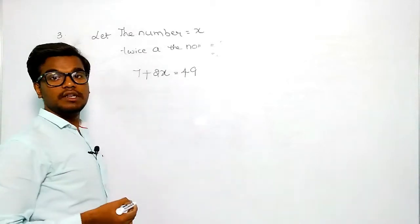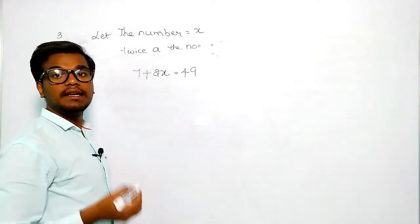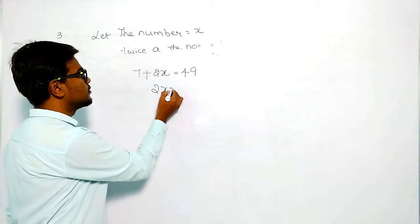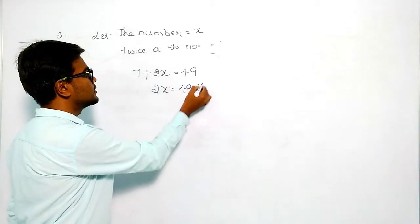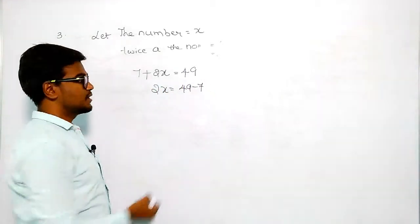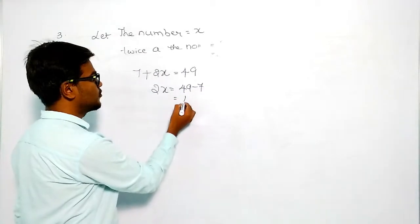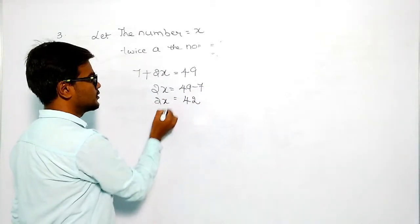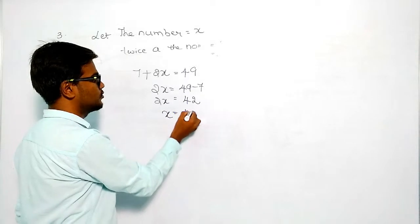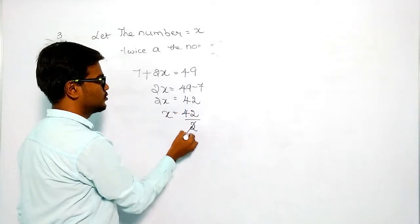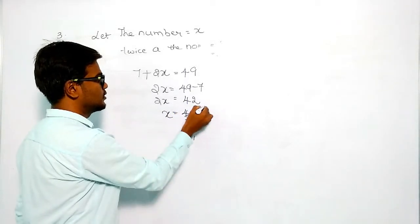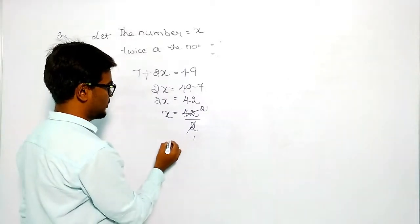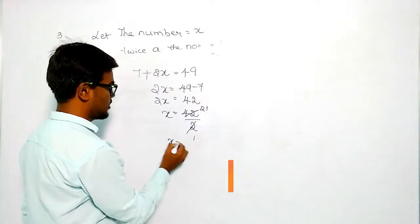So 2x will be equal to 49 minus 7. 49 minus 7 is 42. So 2x = 42, which means x equals 42 divided by 2, giving x equals 21. This is the final answer.